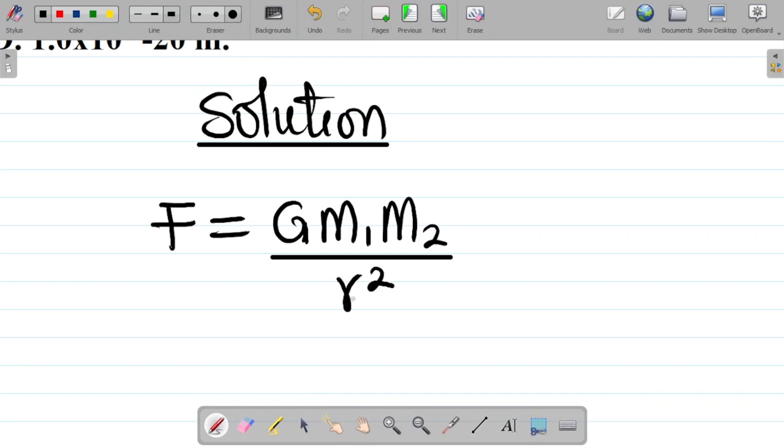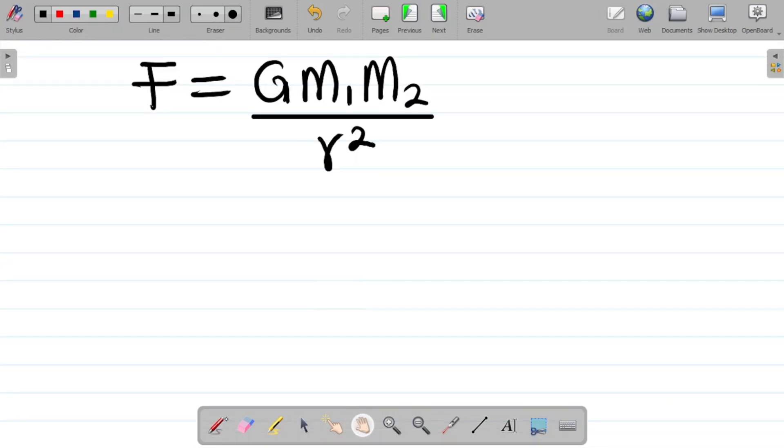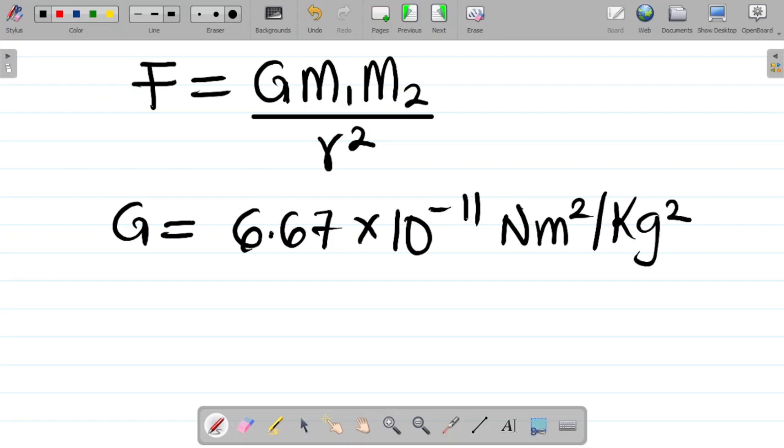This is the formula or the mathematical expression of Newton's law of universal gravitation. G is a constant, the universal gravitation constant, whose value is 6.67 times 10 to the power minus 11 Newton meters squared per kilogram squared.